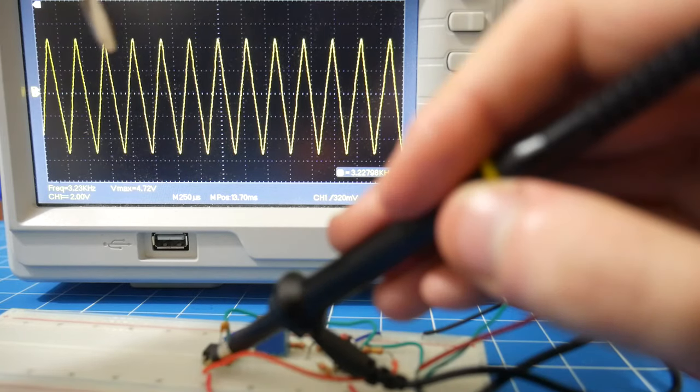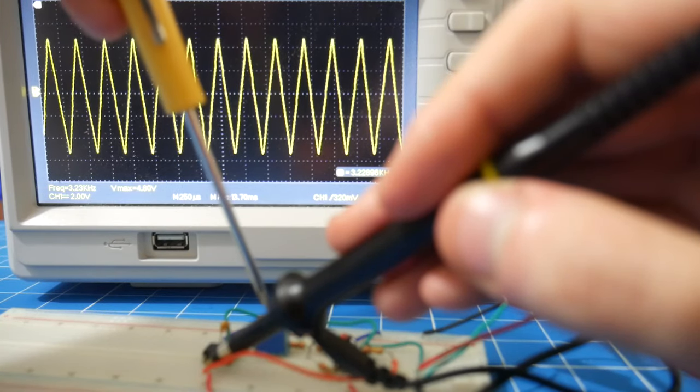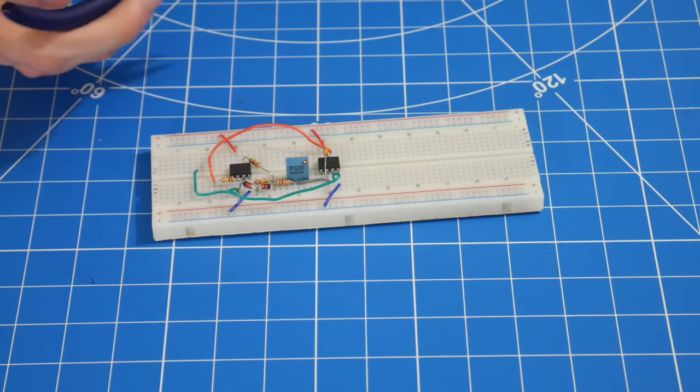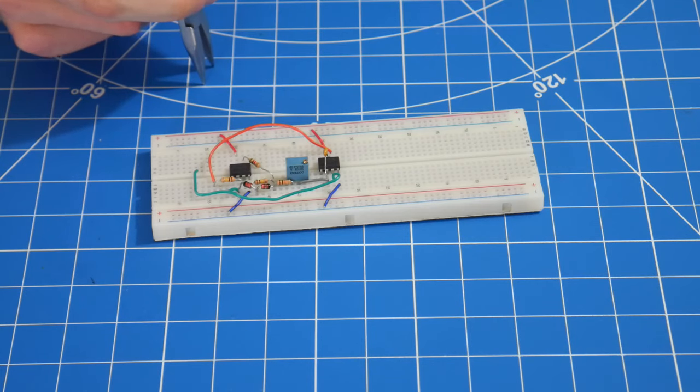Now, if I want to change the frequency, I need to change the value on this potentiometer here. So, if all you wanted to do was make a square wave or a triangle wave, then, hey, pretty good. You're done.